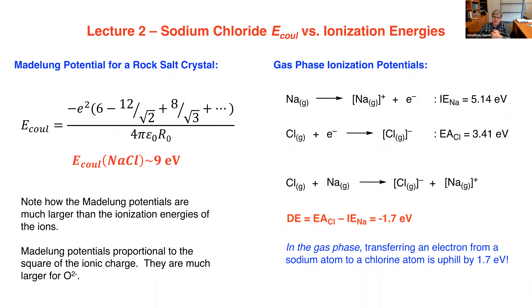The result is a material with a band gap of about 9 eV. Each of these contributions — Madelung potential, polarization, orbital overlap — contributes to the electronic structure of sodium chloride. Most significantly, the Coulomb forces associated with formation of a lattice of ions is really what is calling the shots here for sodium chloride.